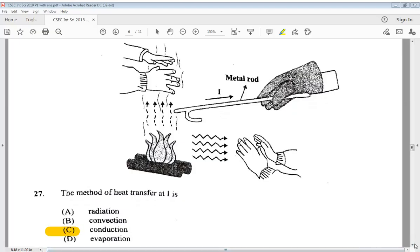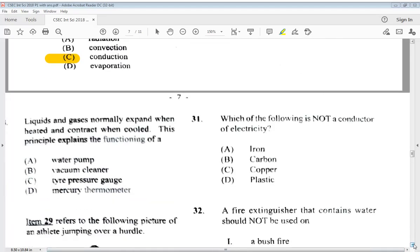Let's move to number 28. Liquids and gases normally expand when heated and contract when cooled. This principle explains the functioning of A, water pump, B, vacuum cleaner, C, tire pressure gauge, or D, mercury thermometer. What is our answer? We know it is D, mercury thermometer.